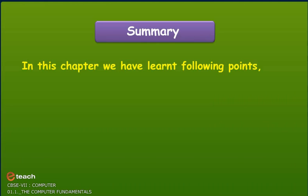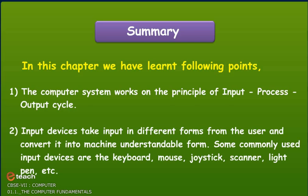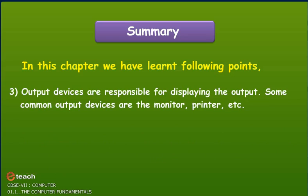Summary: In this chapter, we have learnt the following points. The computer system works on the principle of input, process, output cycle. Input devices take input in different forms from the user and convert it into machine understandable form. Some commonly used input devices are the keyboard, mouse, joystick, scanner, light pen, etc. Output devices are responsible for displaying the output. Some common output devices are the monitor, printer, etc.